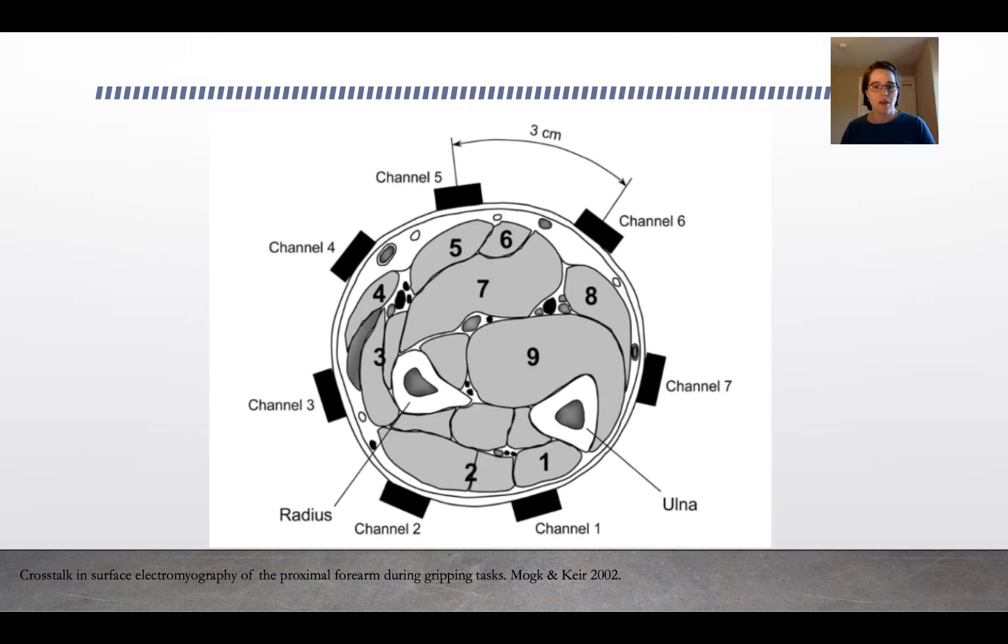Then we'll talk about challenges of EMG. Some of the challenges involved with EMG are related to the fact that muscles are deep. You can see all the muscles numbered in the arm—the radius and the ulna are labeled. If you were to try and measure the electrical activity of muscle 7 or muscle 9 using any of the electrode channels 1 through 7 that are placed around here, you're going to have a very difficult time because there are other muscles in the way that are being activated potentially as well in that contraction, and so you're not going to get a clean picture of what those deeper muscles are doing.